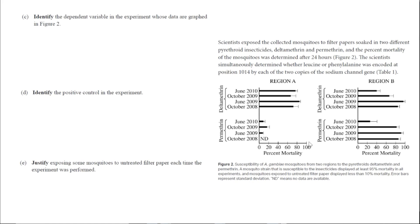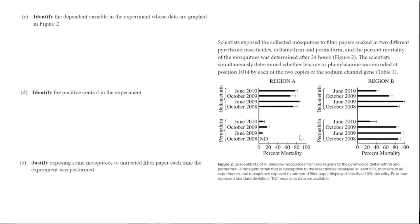For Parts C, D, and E, we are given more information in the passage. For Part C, we're going to identify the dependent variable in the experiment whose data are graphed in Figure 2. The dependent variable is what we are measuring. If you look at the graphs, they are measuring percent mortality as a function of each time point and which type of pyrethroid was used. So the dependent variable is percent mortality. Alternatively, you could also mention susceptibility to the insecticide — susceptibility or mortality are synonymous here, so either would work.